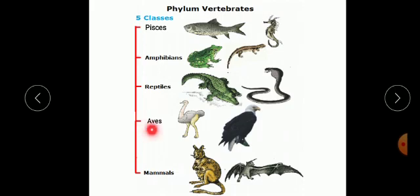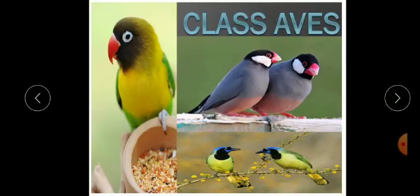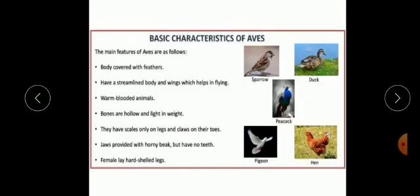Today we will start with Aves. Class Aves consists of birds. Let us first discuss basic characteristics of Aves. The main features of Aves are as follows: their body is covered with feathers, they have a streamlined body and wings which help in flying.